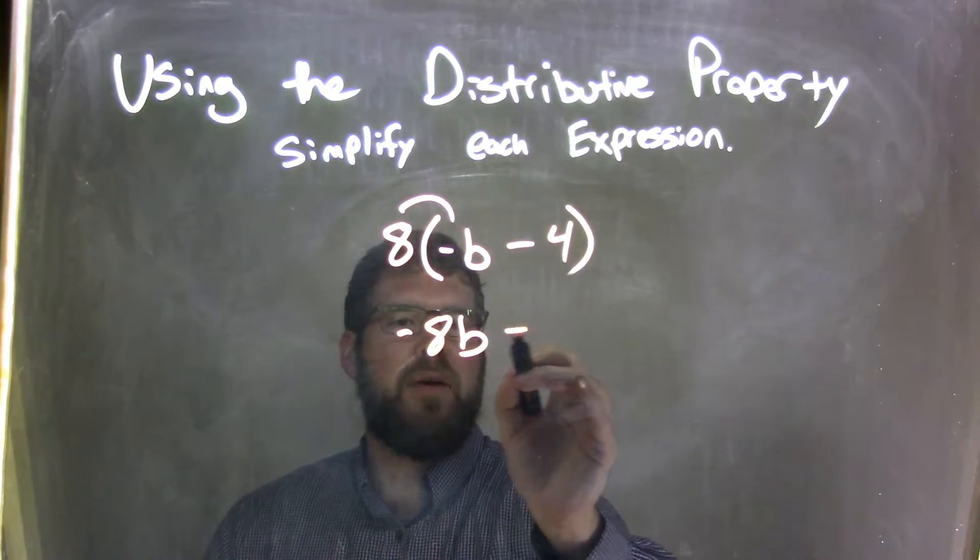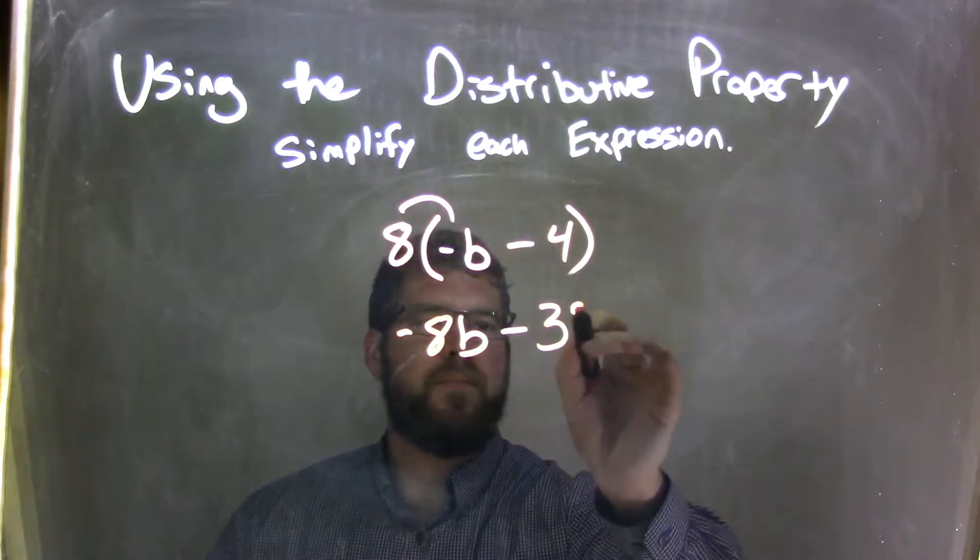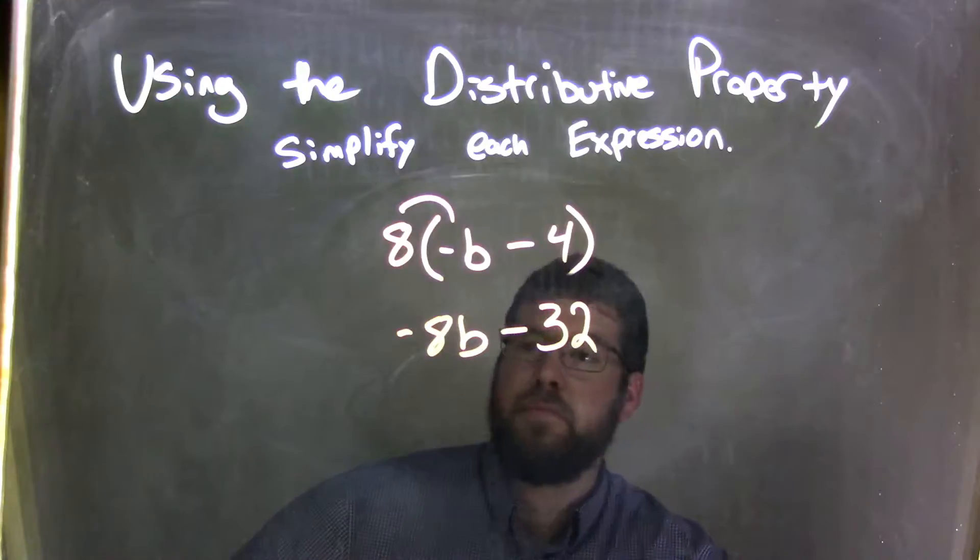Now we have the minus sign that comes out. 8 times 4 is 32, and that's it.